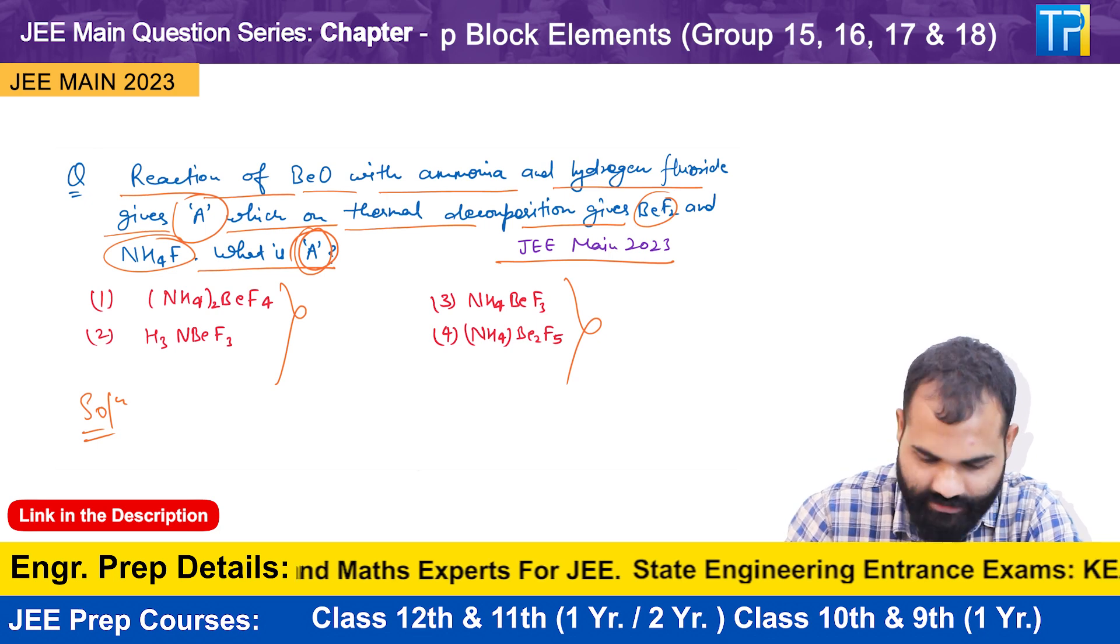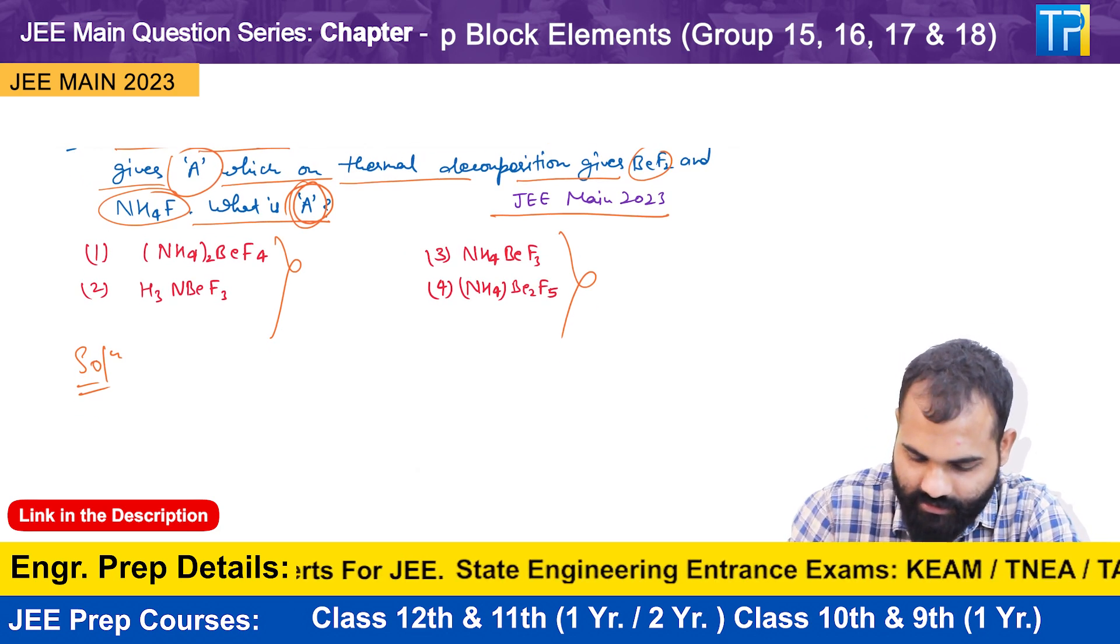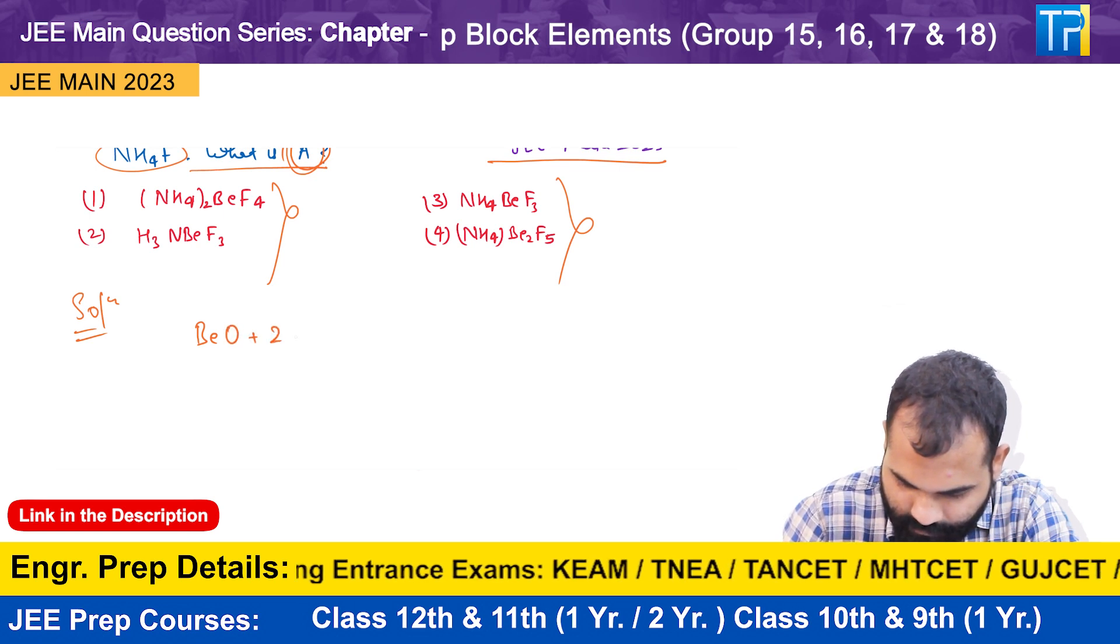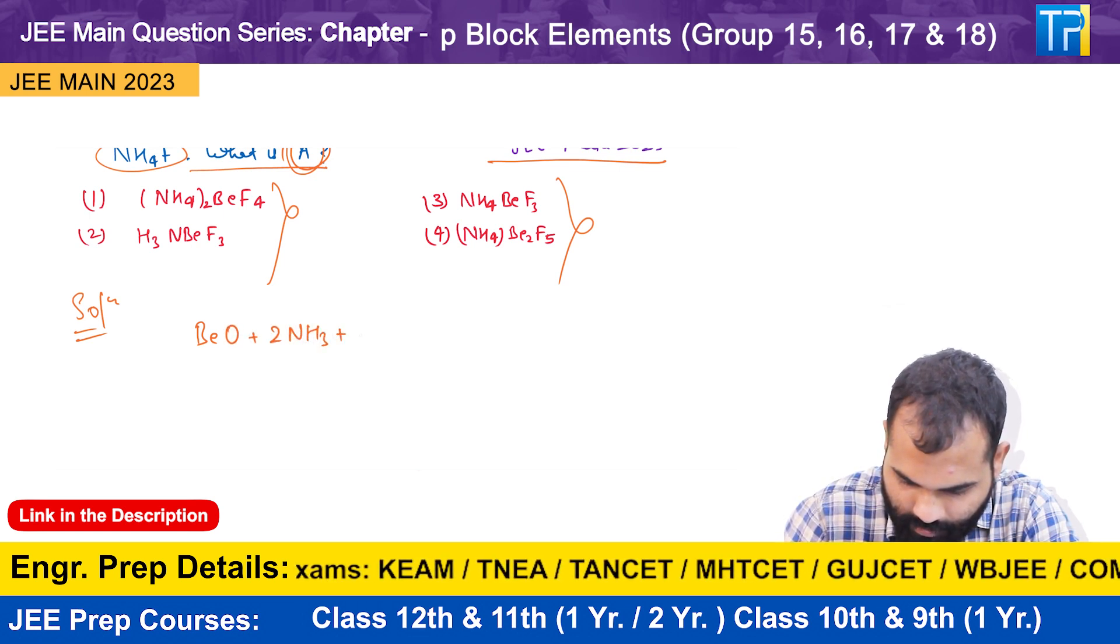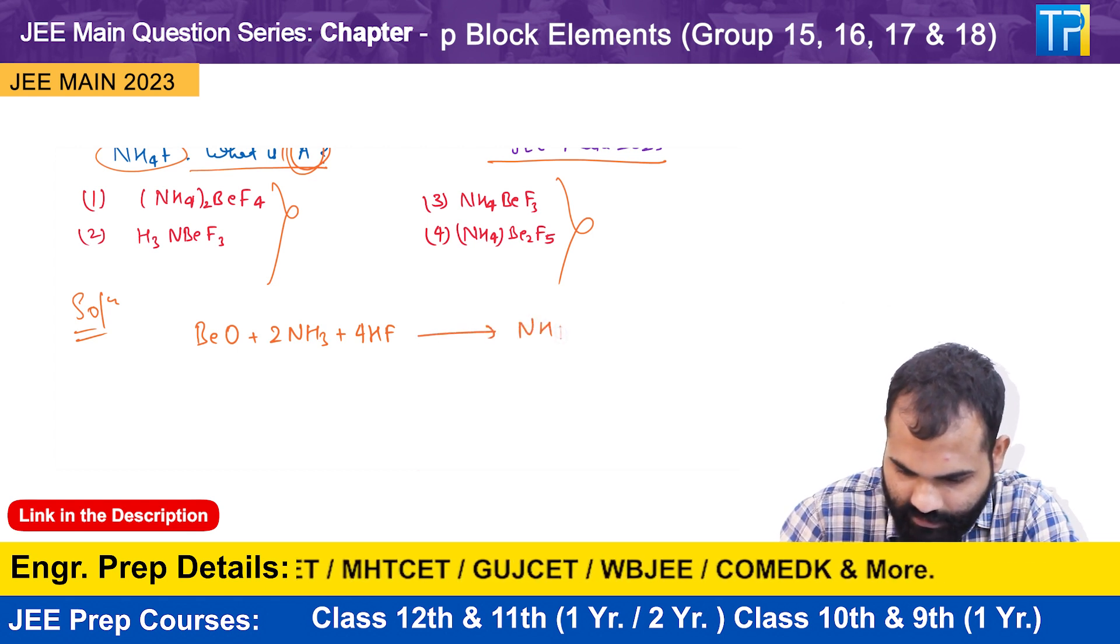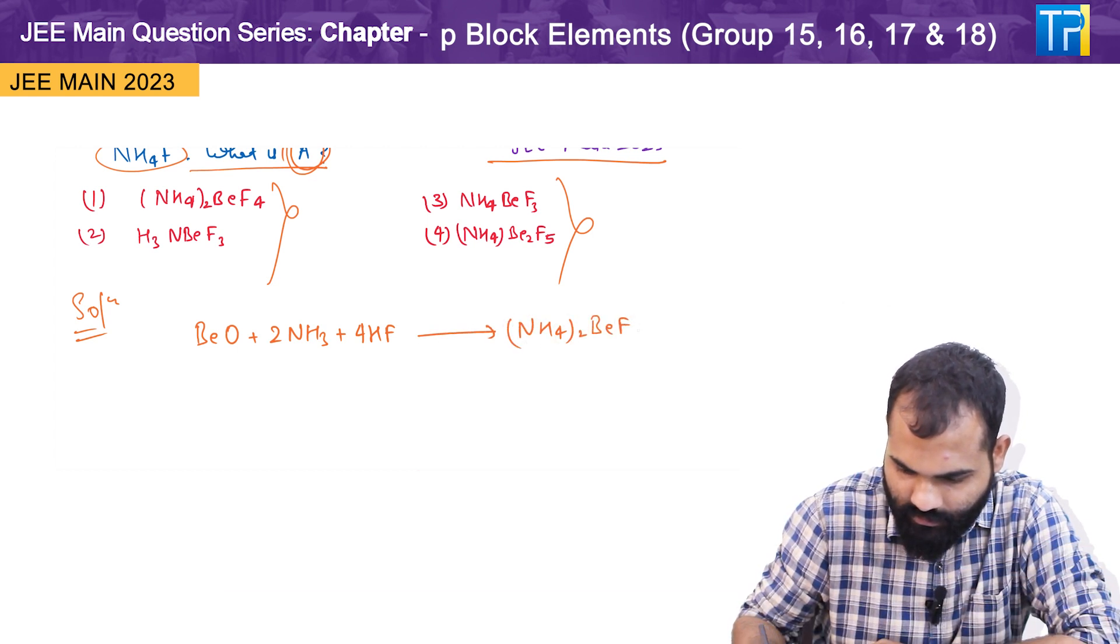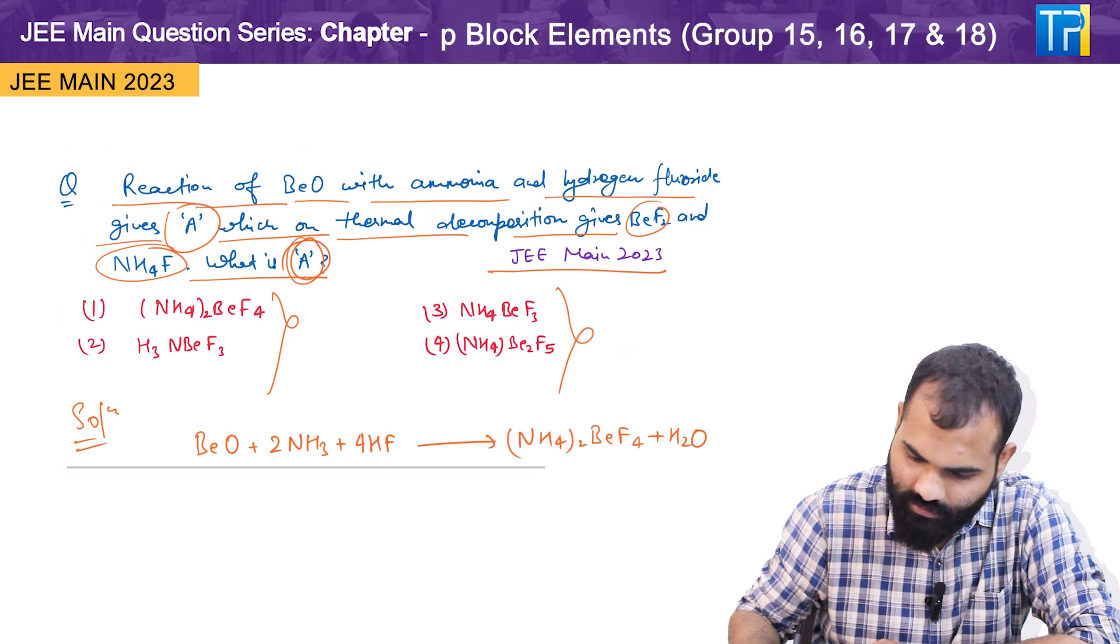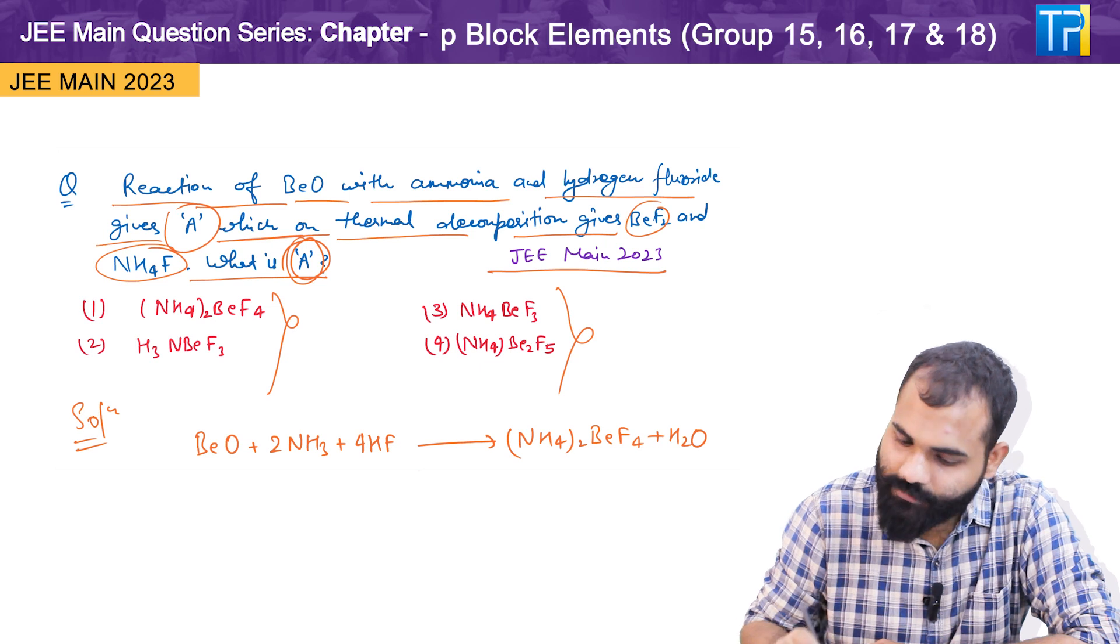So we have to find A. BeO reacts with ammonia and hydrogen fluoride to give A, which on thermal decomposition gives BeF2 and NH4F.